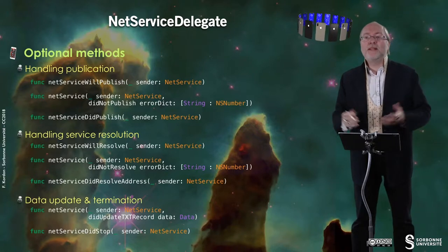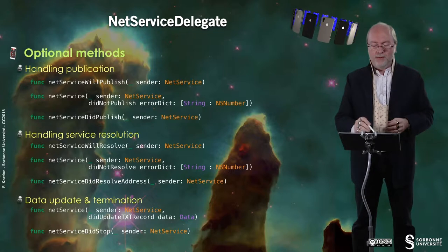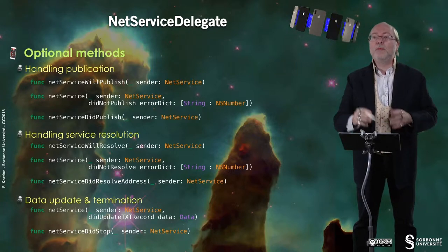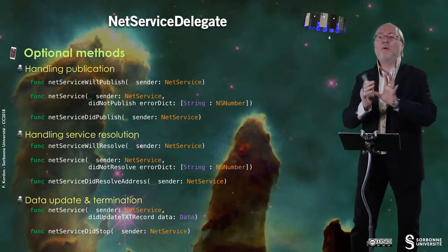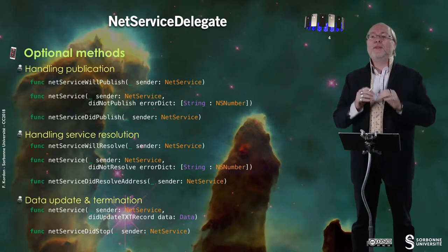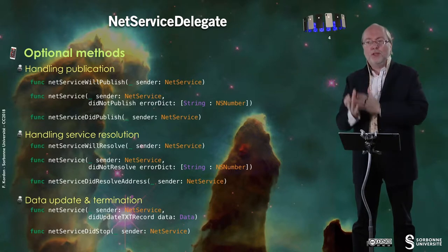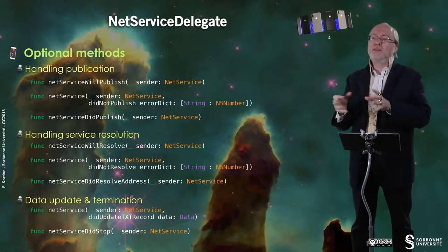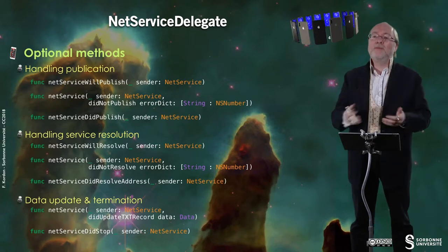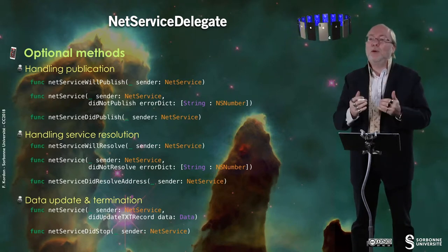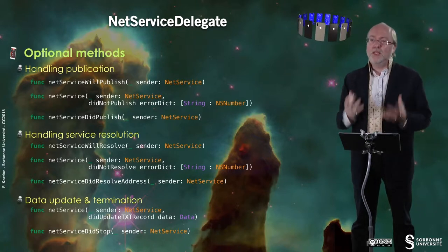Let's have a look at the methods of NetServiceDelegate. All methods are optional. You have some methods handling publication: NetService will publish, invoked just before the publication; NetService did not publish, where you get a dictionary with the reasons why your service was not published; or NetService did publish, confirming that everything is okay.